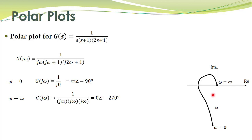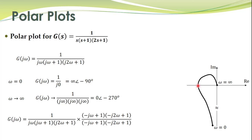In polar plots, one piece of information we need precisely is the crossing of the graph on the real axis. So we determine where this graph crosses the real axis. To do that, we rationalize this complex number by multiplying both the numerator and denominator by the complex conjugate of each term.